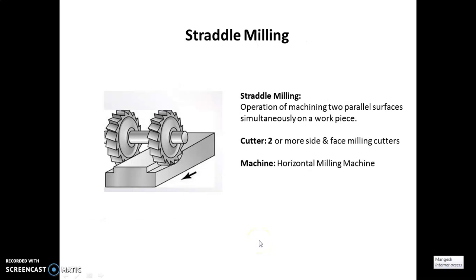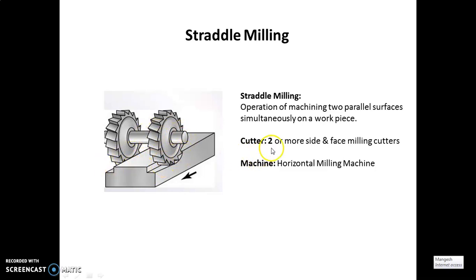Next is straddle milling. This is a very important type of milling process because two parallel surfaces on a workpiece can be cut simultaneously, as represented in this diagram. Two cutters are mounted on a spindle and at the same time different parallel sections are cut. Two or more side and face milling cutters are used, and it is performed on a horizontal milling machine.